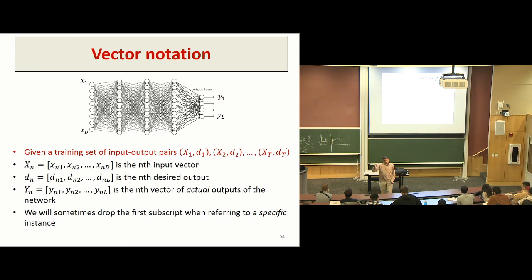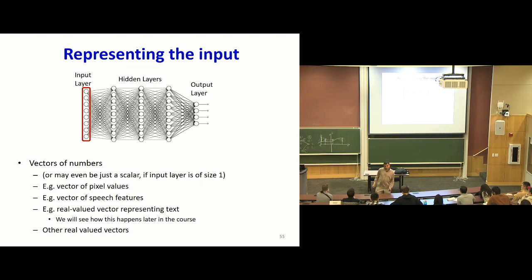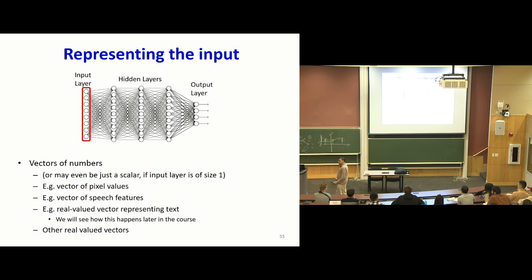For each input you will have a desired output — what the output must be — and also the actual output that the network computes. Now, what are the x's? These have to be collections of numbers; neural networks work on numbers. So even if you're working on images, text, or speech, you have to convert them to collections of numbers. For images, those could just be pixel values. For speech, it could be features derived from the speech. For text, you would convert to a sequence of numbers.